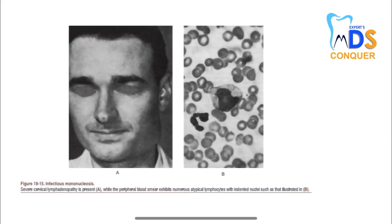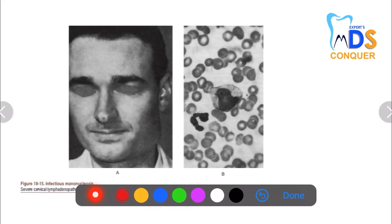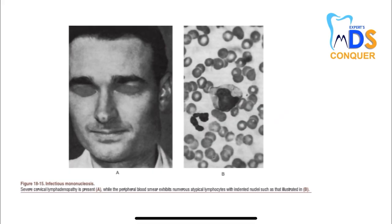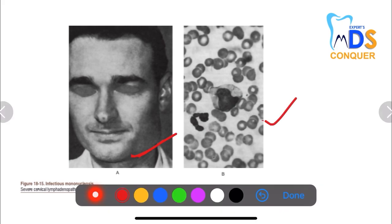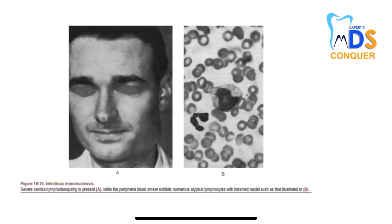Next, infectious mononucleosis. The peripheral smear exhibits atypical lymphocytes with indented nuclei, illustrated here. There are numerous atypical lymphocytes seen with infectious mononucleosis. Picture A shows severe cervical lymphadenopathy, and histology shows atypical lymphocytes — both go in favor of infectious mononucleosis.